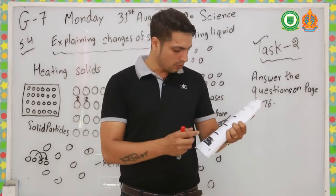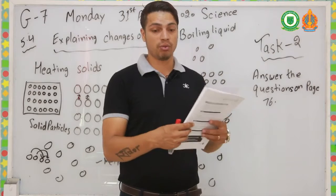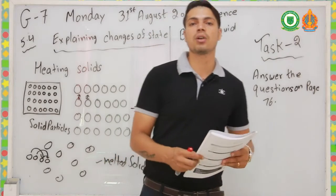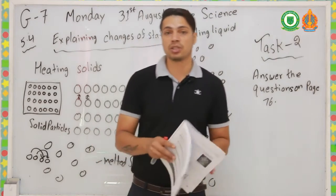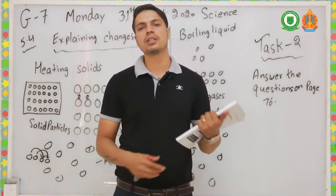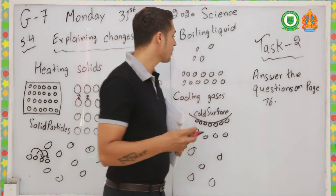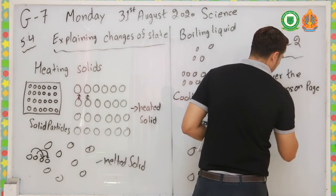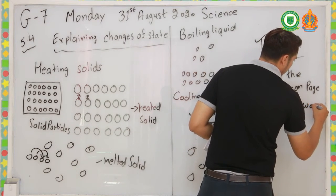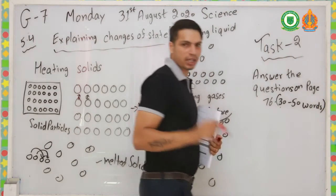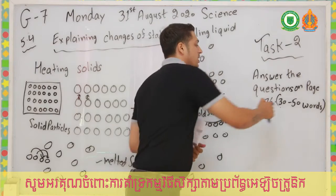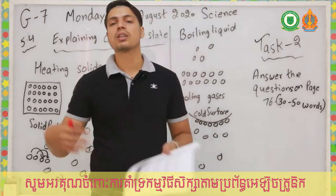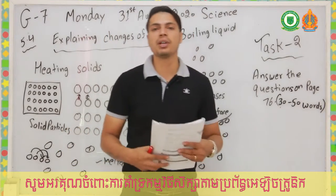We are doing this as a remote learning activity — if we were in class we would do it there. Answer all three questions with 30 to 50 words each. I don't want one-word answers. If you don't give me 30 to 50 words, you will not get full marks. See you in the last and third video.